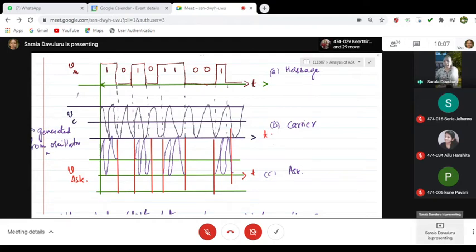And this is a carrier signal which is of continuous waveform in nature. At the point when the signal is having 1, that means presence of the information, these two are getting multiplied, you are able to get the ASK signal.